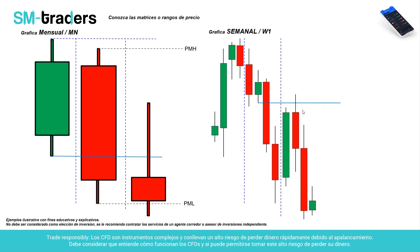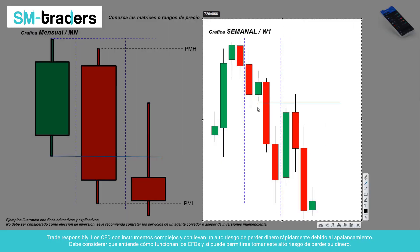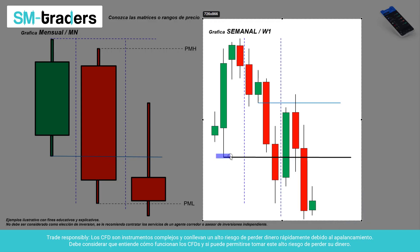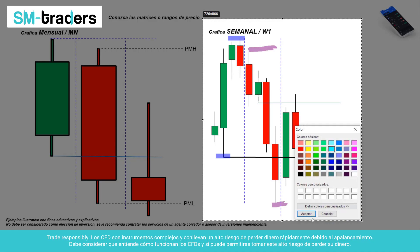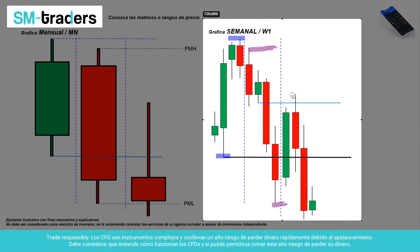Aquí tenemos identificado el bloque de pedidos. Mira cómo el precio sube, capitaliza y se va a la baja. Viéndolo en la gráfica semanal se ve de esta manera, pero si me traslado a una vela mensual, voy a utilizar como referencia el mínimo: el mínimo del mes 1 y el máximo del mes 1. Luego viene la vela roja con su máximo y mínimo correspondiente. Después vemos el máximo al que viene a capitalizar: el precio sube, se mete en el bloque de pedidos y termina bajando, neutralizando los mínimos anteriores.